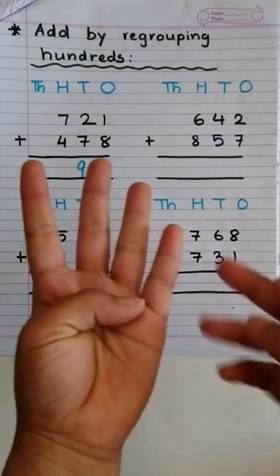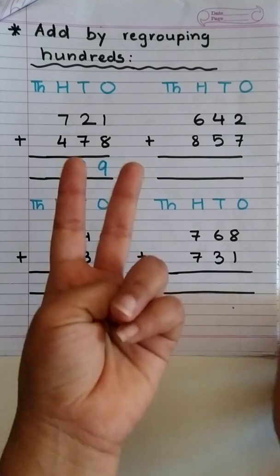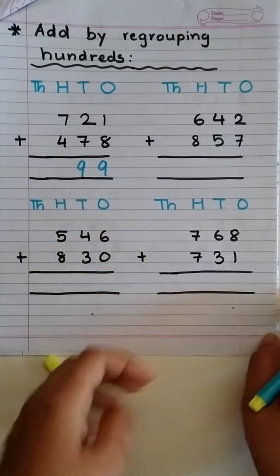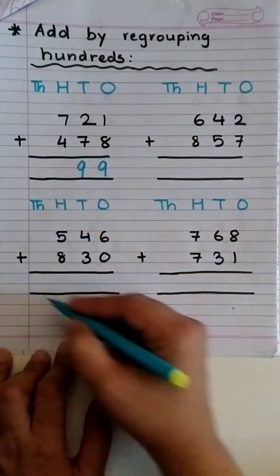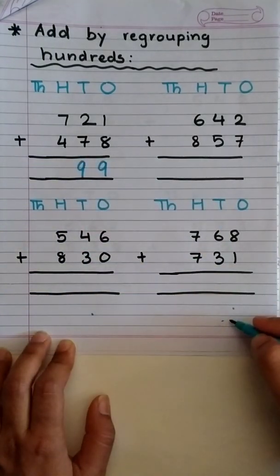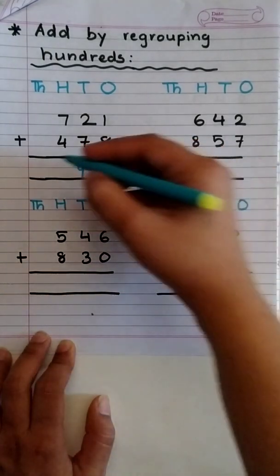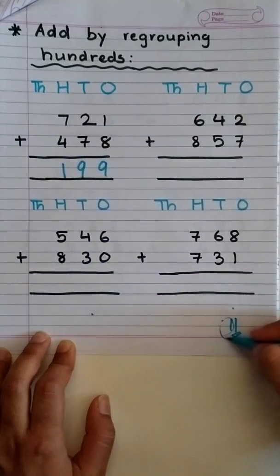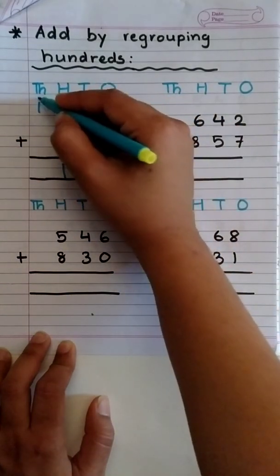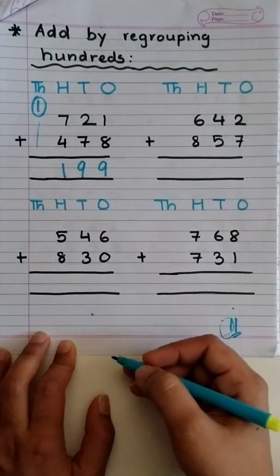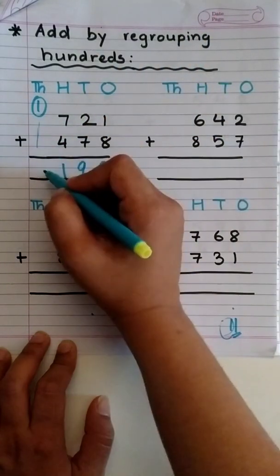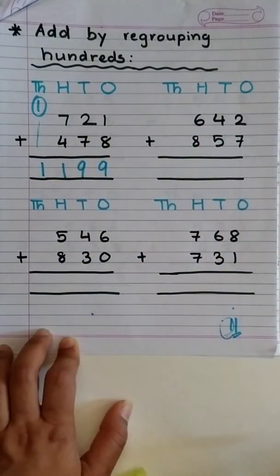And 7 plus 4. So, 7 in mind, 4 on finger. After 7, 8, 9, 10, 11. Answer is 11. Now, we'll write, as the answer is 11, we'll write this digit over here. And the other digit goes up. But, as we can see, there is nothing over here at thousands place. So, we'll write 1 directly over here.